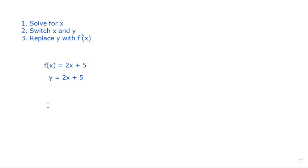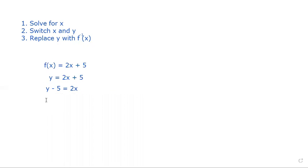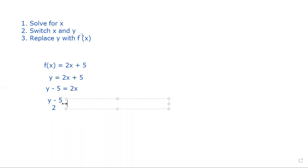The first thing we want to do is solve for x — get x by itself. So we're going to subtract five from both sides, giving us y minus five equals 2x. Then we divide everything through by two, which gives us (y minus five) over two equals x.